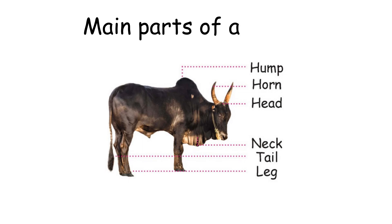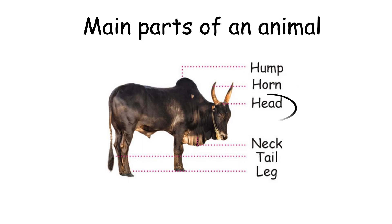Main parts of an animal are hump, horn, head, neck, tail and leg.